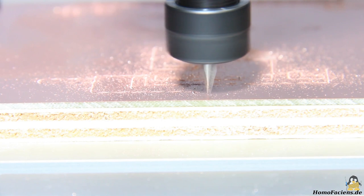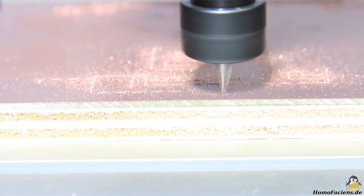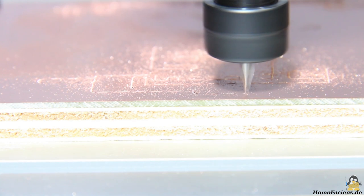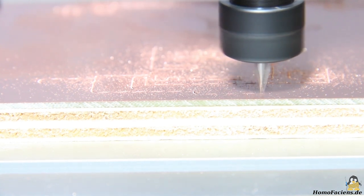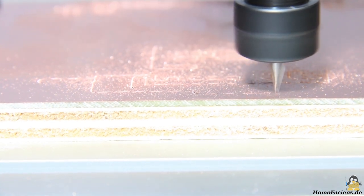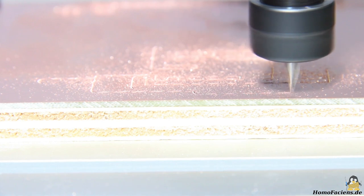In the first pass the copper coating is only scratched. It can be seen that the milling cutter dives into the material to different degrees. The boards I purchased for my first tests are the cheapest I could get.